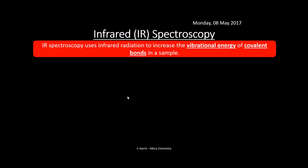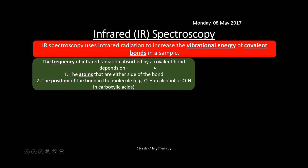Infrared, or IR spectroscopy: IR uses infrared radiation to increase the vibrational energy of covalent bonds in a sample. The frequency of infrared radiation absorbed by a covalent bond depends on certain factors: the atoms either side of the bond — heavier atoms give a different frequency than lighter ones — and the position of the bond in the molecule, such as whether it's near an OH group or a carbonyl group in a carboxylic acid. This all affects the vibrational energy of the covalent bond when it absorbs infrared.